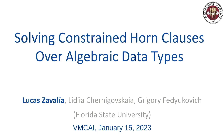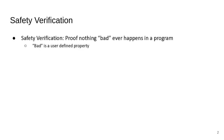The first order of business is to explain why we would want to solve constrained horn clauses over algebraic data types. The reason we do that is for safety verification. Basically we want to be able to mechanically synthesize a proof that nothing bad ever happens, with bad being a user-defined property.